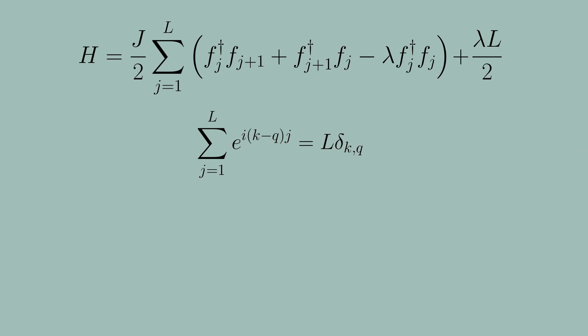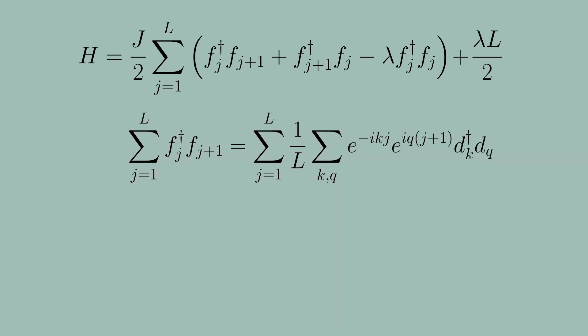So what exactly is this telling us? It's telling us that if we sum over all of these complex numbers the result is zero if our discrete momenta k and q are different or if they are the same we just end up summing up one a whole bunch of times so it sums to L which is the system size or the number of lattice sites. With this in mind we can now apply the transformation to our Hamiltonian.